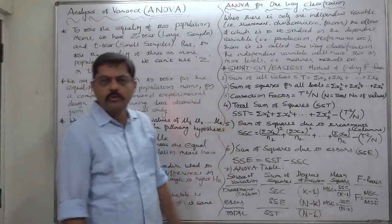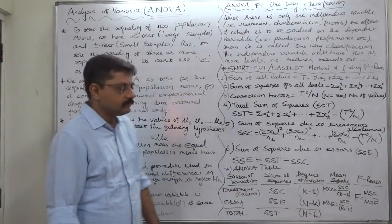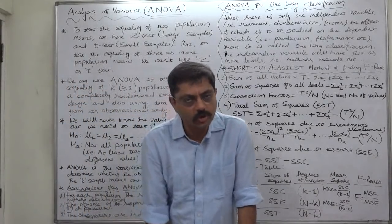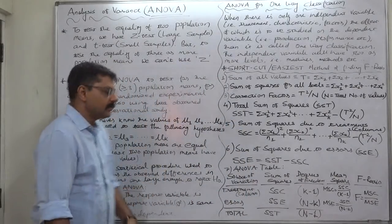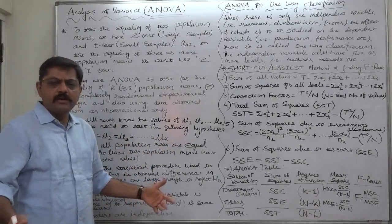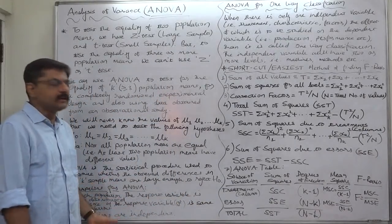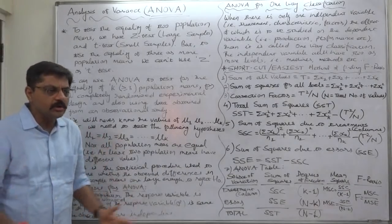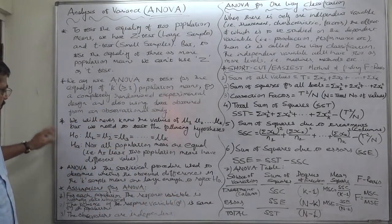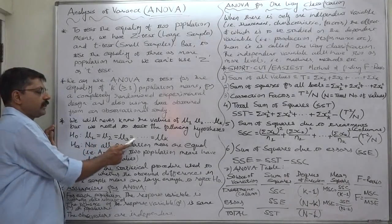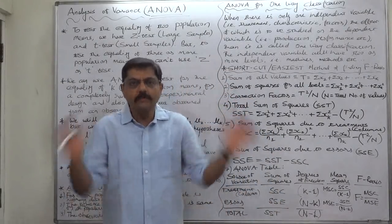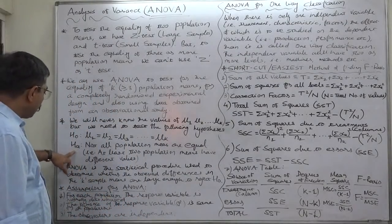We will never know the values of mu-one, mu-two, mu-three up to mu-K, as there are K populations. The population size can be infinite, so we can never calculate the population means. But we need to test the following hypothesis. We are not in a position to find out the correct values of all the population means, but we want to test the hypothesis. The null hypothesis is: mu-one equals mu-two equals mu-three, up to mu-K — meaning there is no significant difference between all the population means.